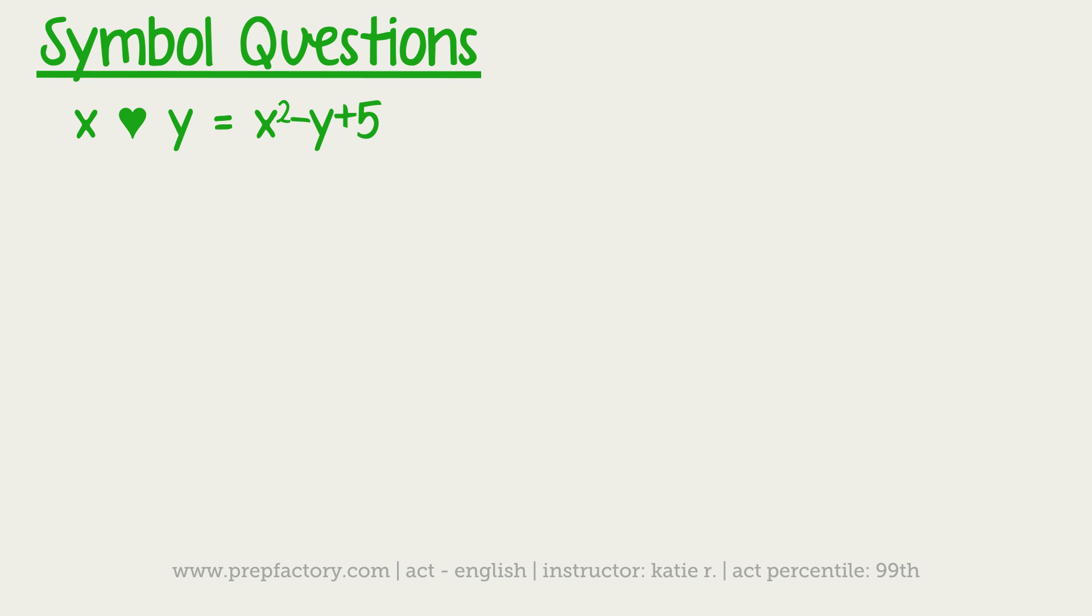If I have x heart y equals x squared minus y plus 5, and they want to know what 2 heart 3 is, I would just fill in so x is 2 and y is 3. So you have 2 squared minus 3 plus 5, which gives you 4 minus 3 plus 5, so you end up with 6 as your total answer. That looks simple enough, it's just following directions - the first thing is x, the second thing is y.